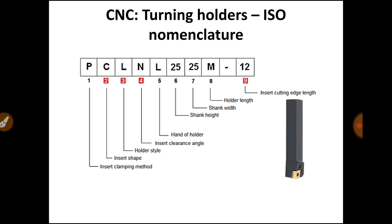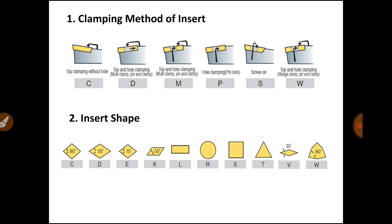Now we will discuss each location in detail. The very first location is the clamping method of insert — how the insert is clamped over the holder. The first diagram is denoted by letter C: top clamping without hole. That means the insert is clamped from the top and does not have any hole.